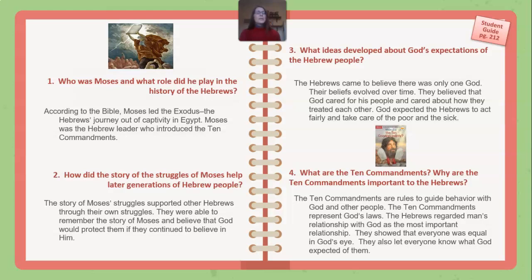Question number three: What ideas developed about God's expectations of the Hebrew people? The Hebrews came to believe there was only one God. Their beliefs evolved over time. They believed that God cared for his people and cared about how they treated each other — God expected the Hebrews to act fairly and take care of the poor and the sick. Question number four: What are the Ten Commandments, and why are they important to the Hebrews? The Ten Commandments are rules to guide behavior with God and other people. They represent God's law. The Hebrews regarded man's relationship with God as the most important relationship. They showed that everyone was equal in God's eyes, and they let everyone know what God expected of them.